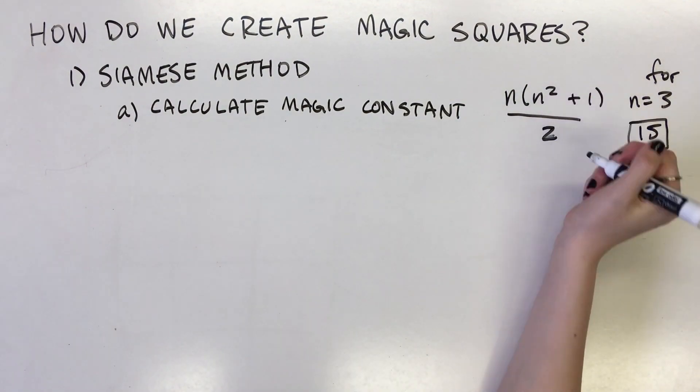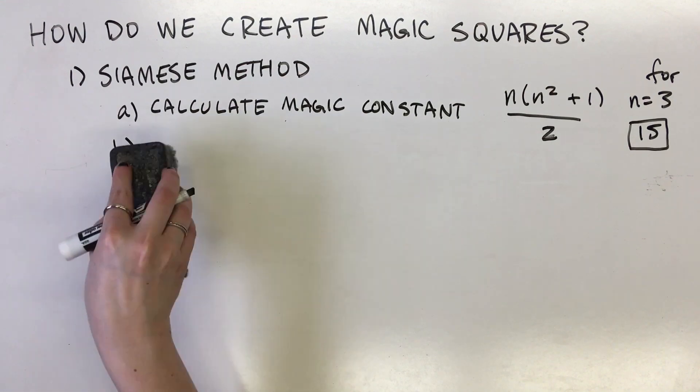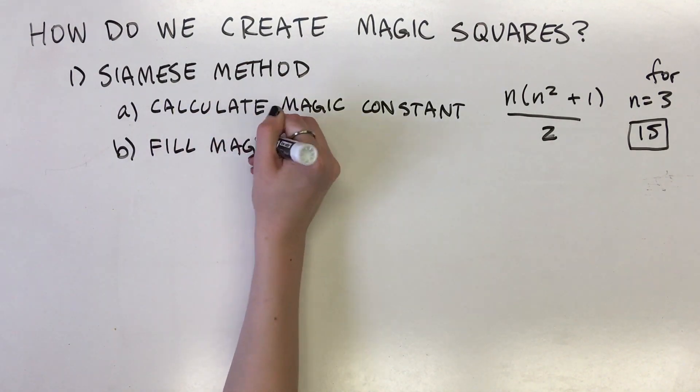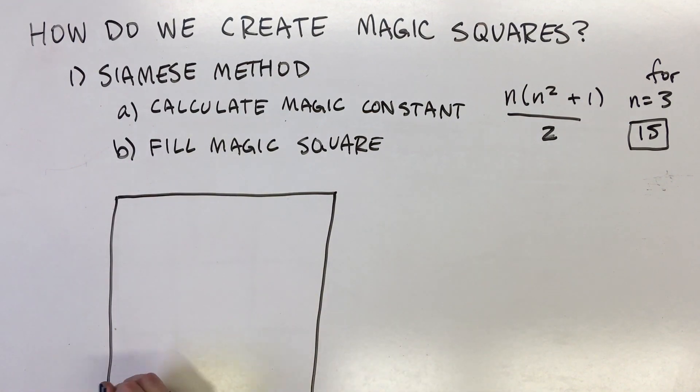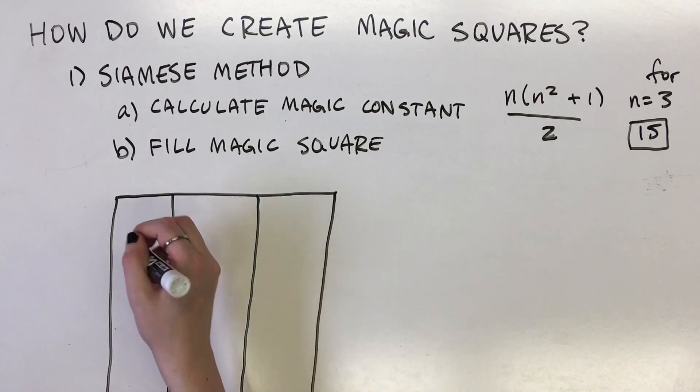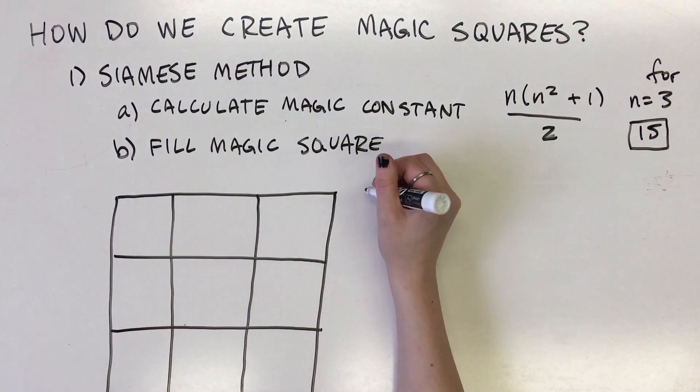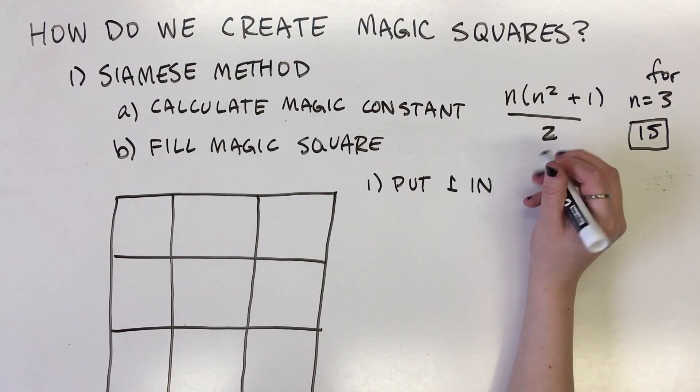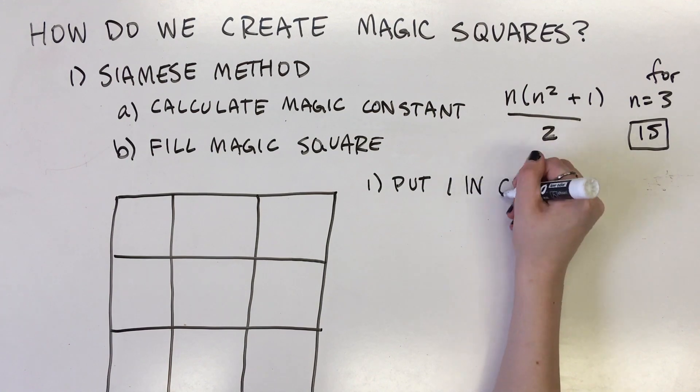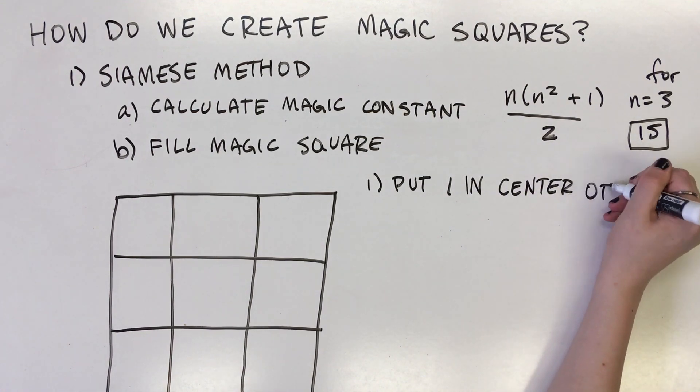When we begin filling in our magic square, we start with the number 1 in the center box of the top row. Regardless of the size of the magic square, this is always where we begin when our magic square has odd-numbered sides. In our example, we will place 1 in the second cell because the second cell is the center box of the top row.